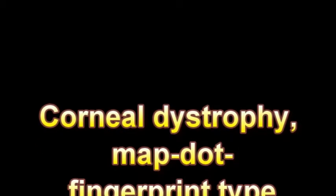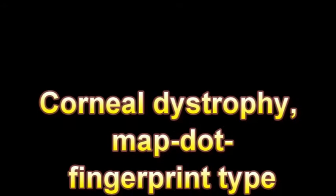Corneal dystrophy, map dot fingerprint type — a disorder in which the cornea, the normally clear front window of the eye, shows geographic map-like lines, dots, or microcysts, and grayish fingerprint lines on examination with a slit lamp.